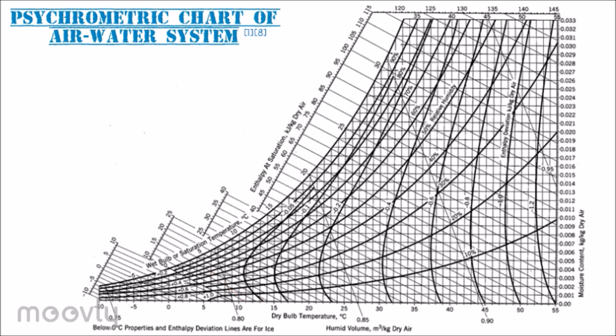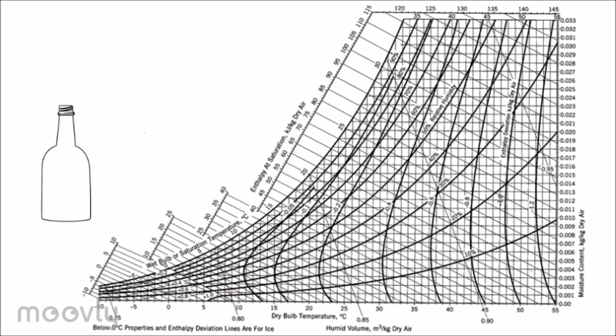Dry bulb and wet bulb can relate to humidity or moisture content using this chart. Now, let's take an example of air water system with dry bulb temperature of 25 degrees Celsius.